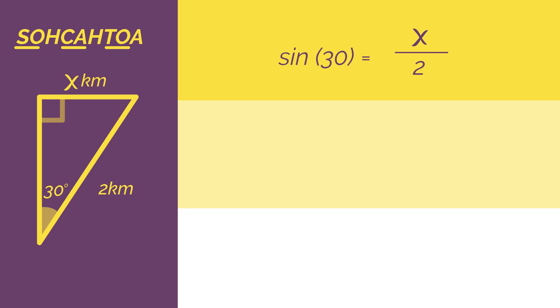But this hasn't given us a value of x yet. So we need to do a simple bit of rearranging. Multiply both sides by 2 and we get 2 times sine 30 equals x. And type that into your calculator, 2 sine 30, and we get x equals 1. Simple really.